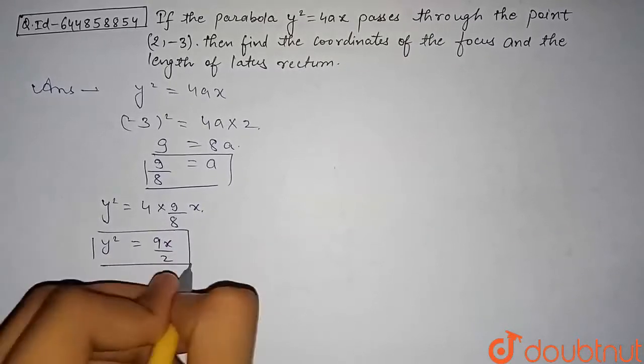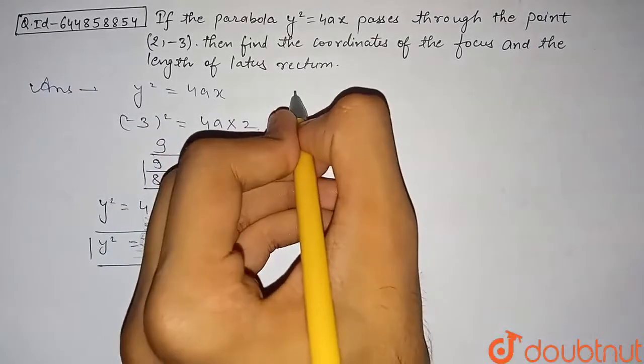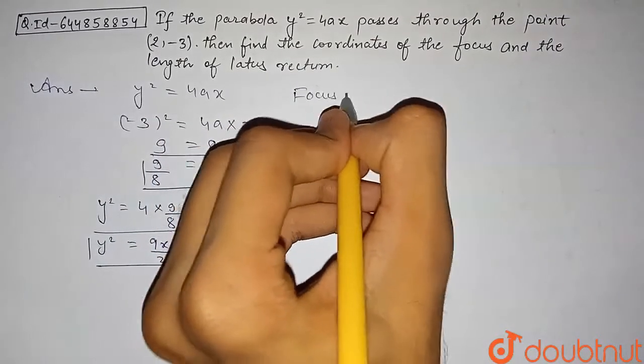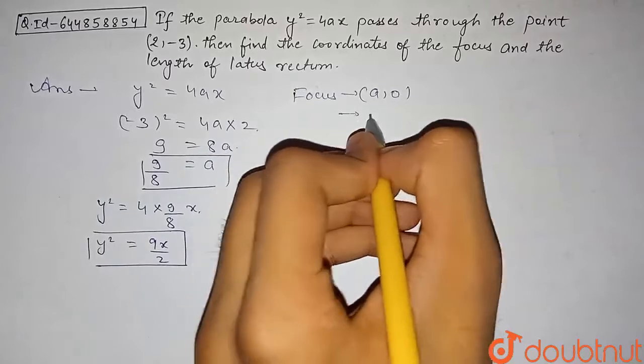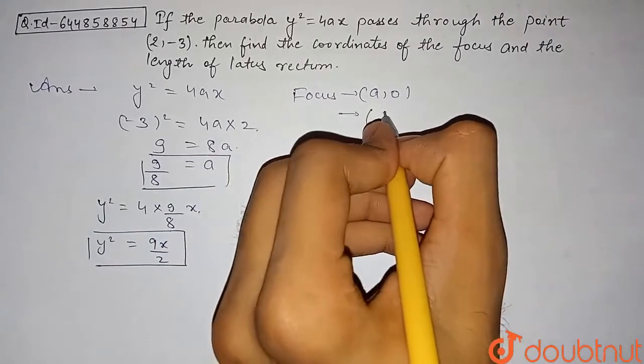For this general parabola, the focus coordinate is given by (a, 0). So for our parabola, we will just substitute a = 9/8, so the focus will be given by (9/8, 0).